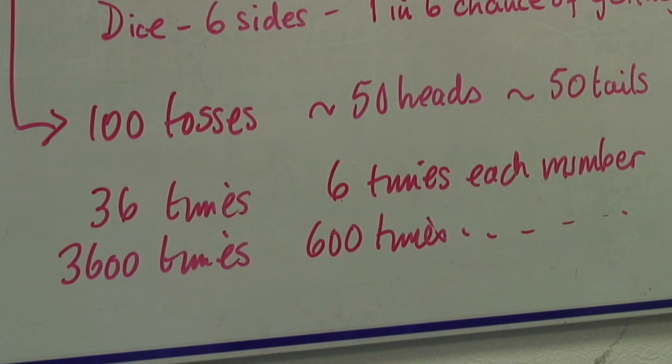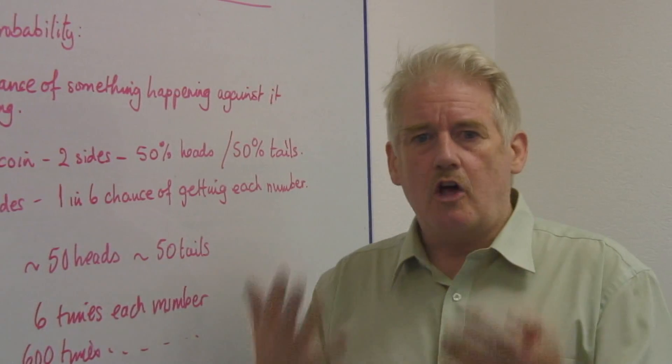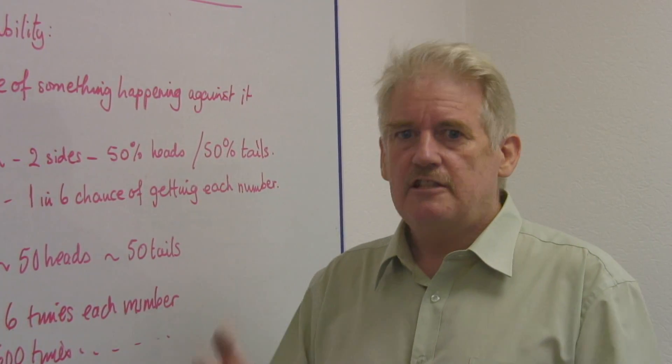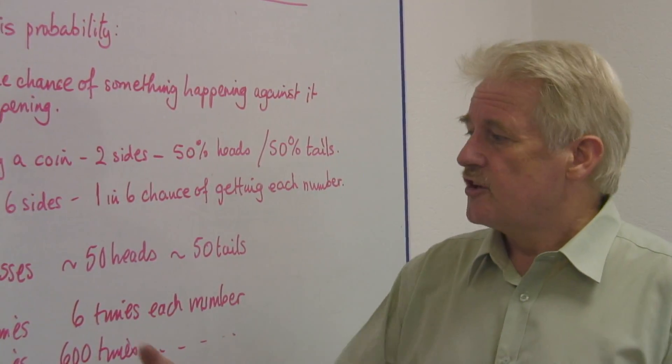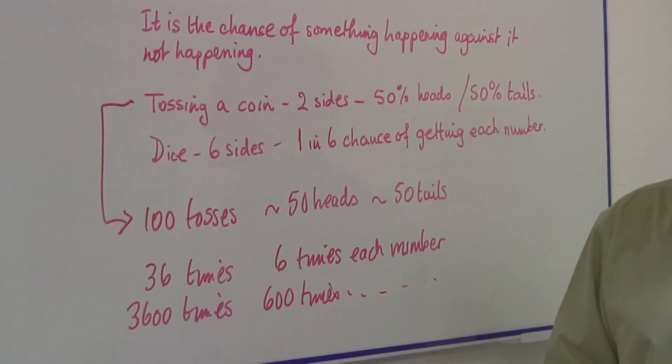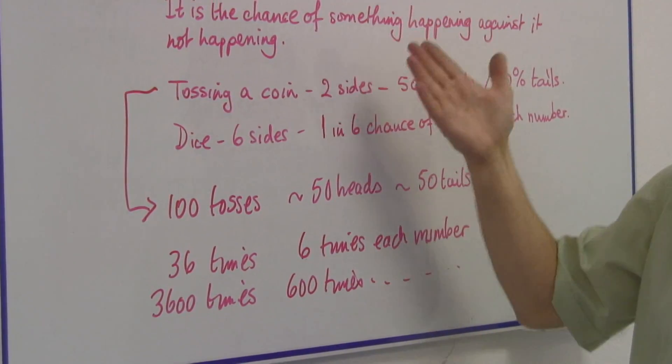Probability is something that happens when we do something a lot of times. It doesn't happen when we do it once, only when we do it a lot of times. So the bigger the numbers get, the nearer it gets to our probability forecast.